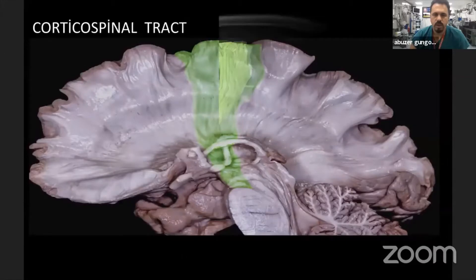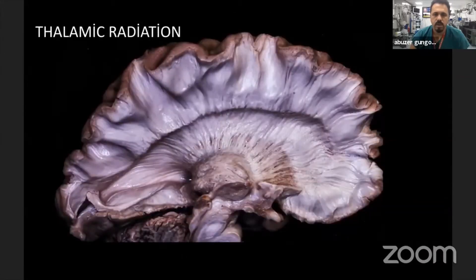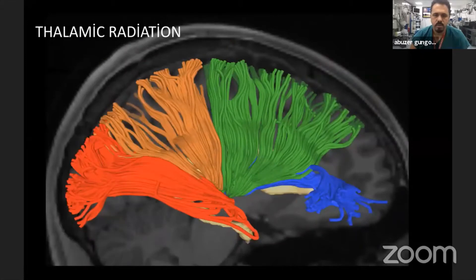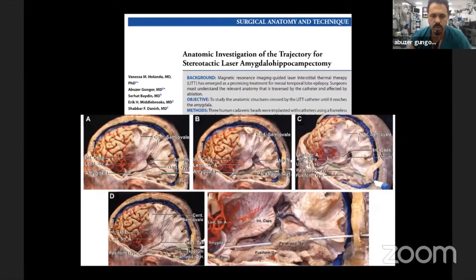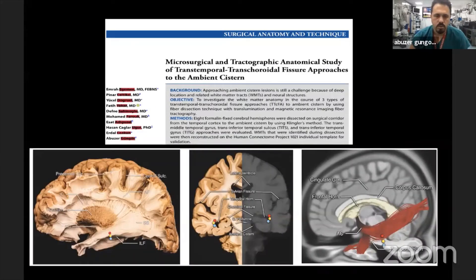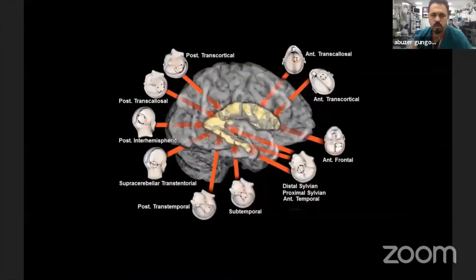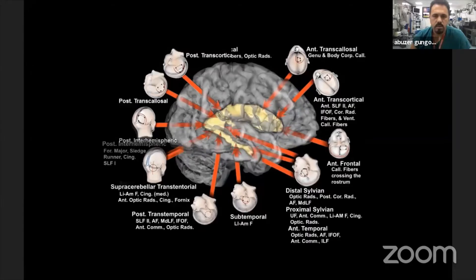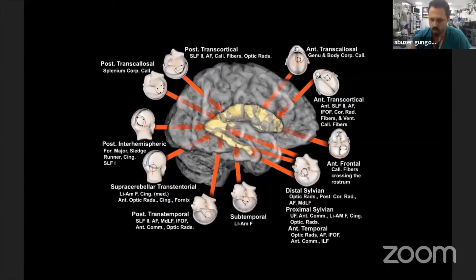The corticospinal tract and thalamic radiation are also important structures. We describe some approaches to the ventricles, and if you know the anatomy, you don't need tractography, intraoperative direct stimulation, or functional MRI most of the time. By knowing all these tracts, you can navigate safely.